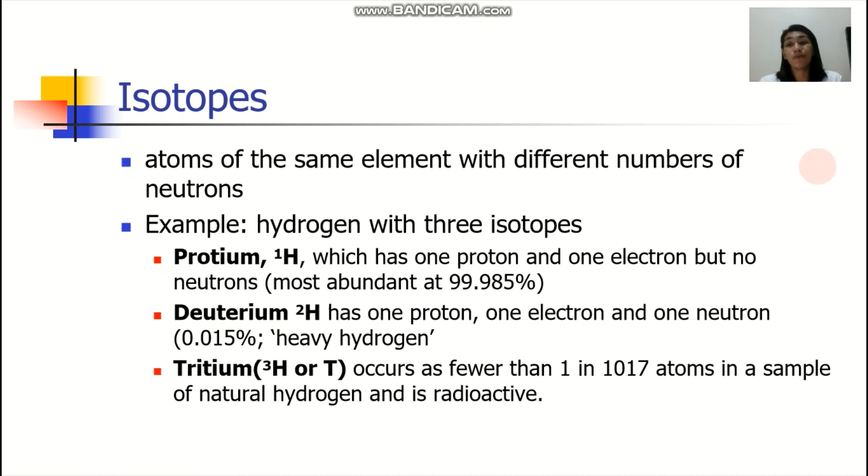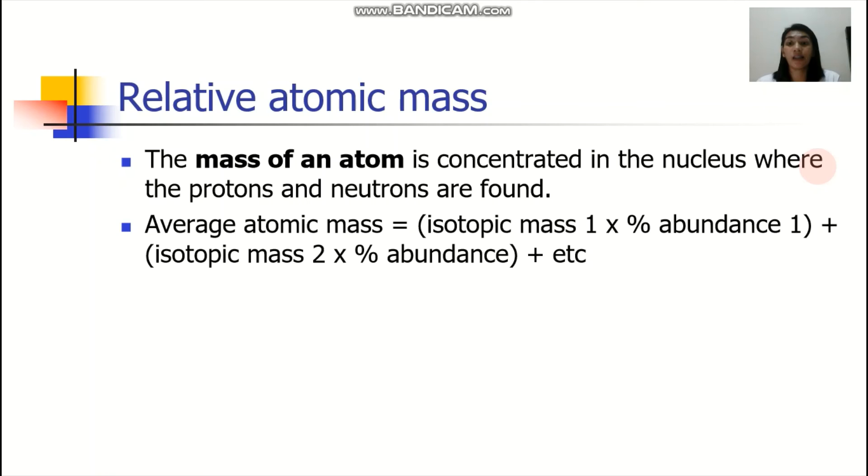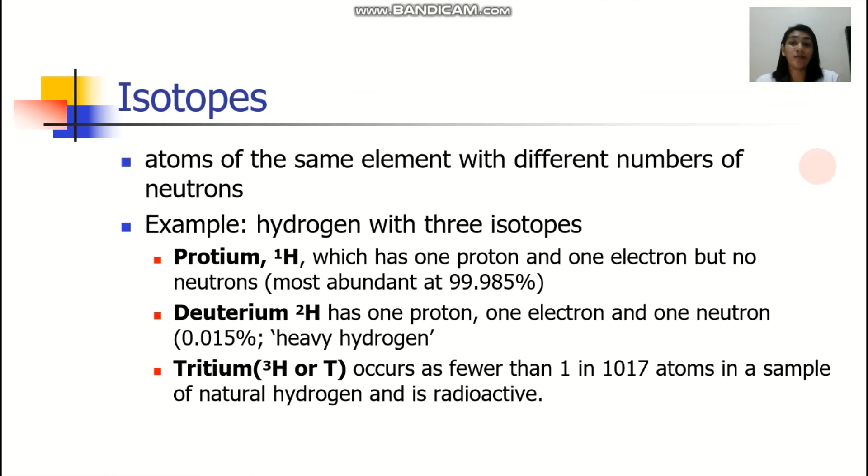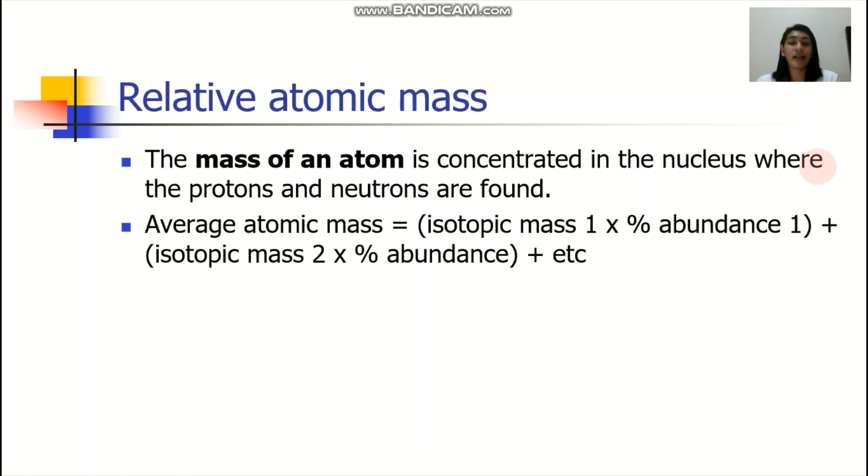Other examples of isotopes, if you have heard of carbon-14. Originally, it's carbon-12, but you have your carbon-14. Why do we need to know your isotopes? The relative atomic mass is actually computed by the average atomic mass. You get the isotopic mass, and you multiply that to its abundance. The mass of an atom is concentrated in the nucleus where the protons and neutrons are found.